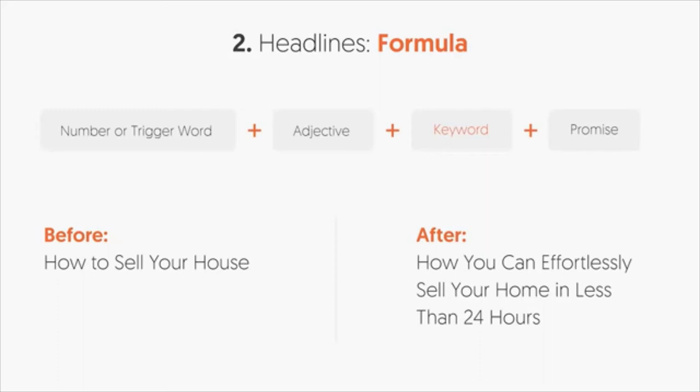With the headline, here's a formula: use a number or trigger word at the beginning, then an adjective, then a keyword, and then a promise. Remember, your headline is different from the title tag. The title tag is what you show to someone searching Google. A headline is what's seen on your own website at the top of the page — people read it and either bounce or scroll down and read the rest of your copy.